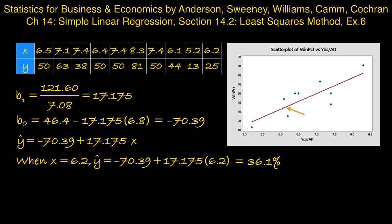There was actually a team in the data set that had a value of X equal to 6.2, yards per attempt of 6.2. That was the Tampa Bay Buccaneers. They ended up with a win percentage of only 25%, and that's the data point that you can see immediately below the arrow.